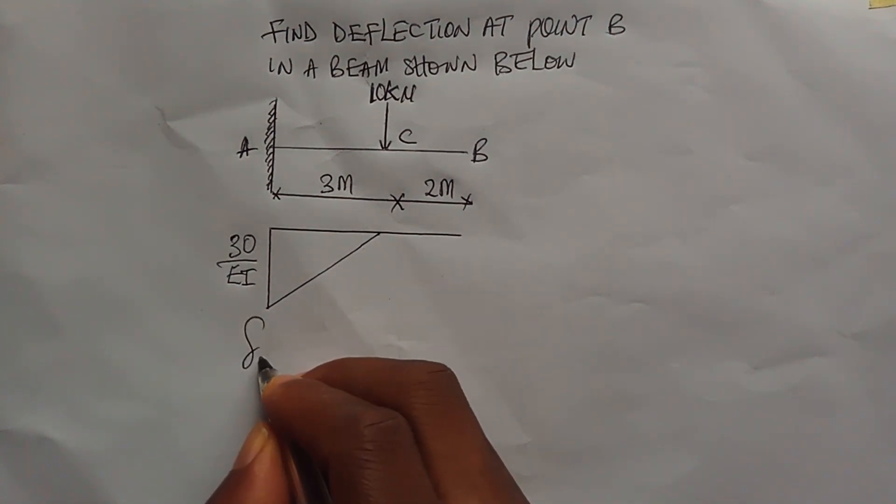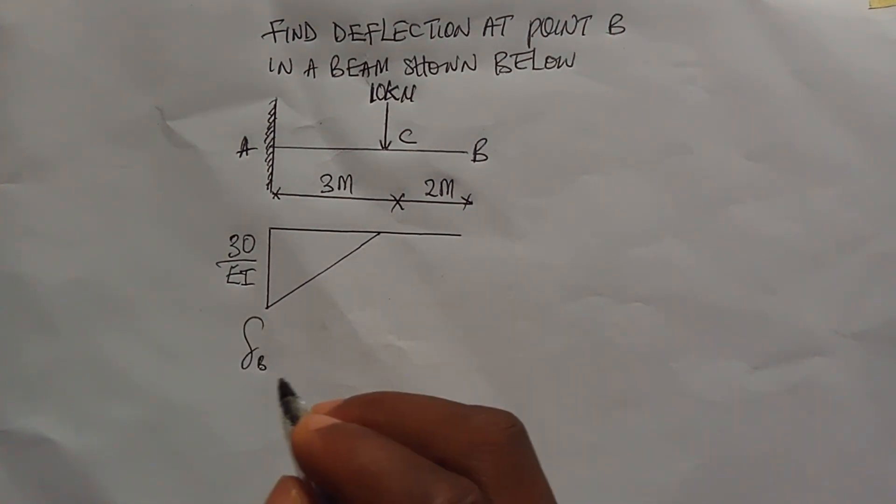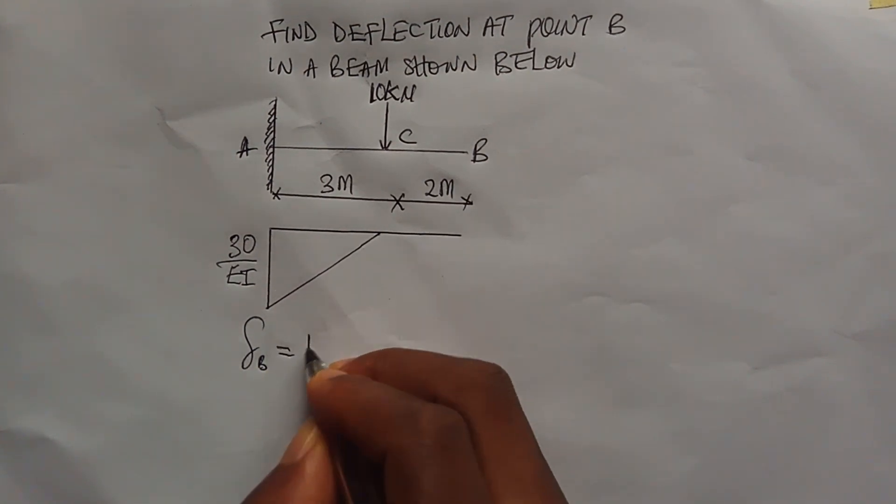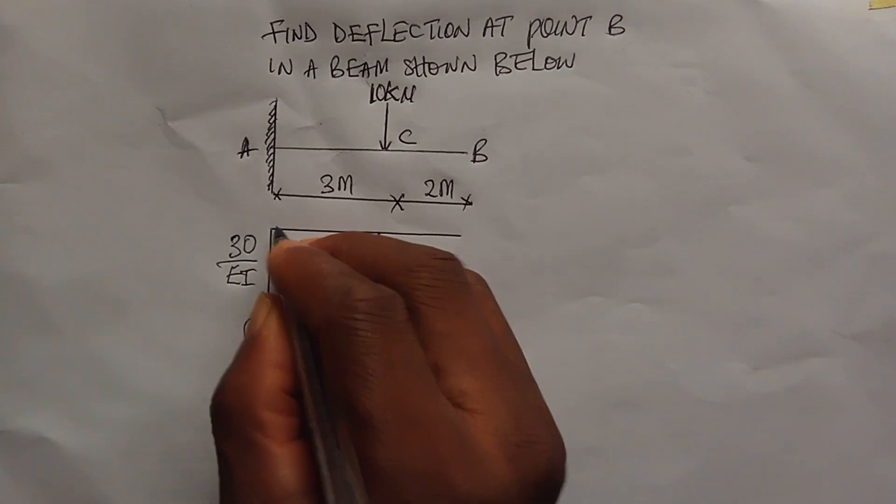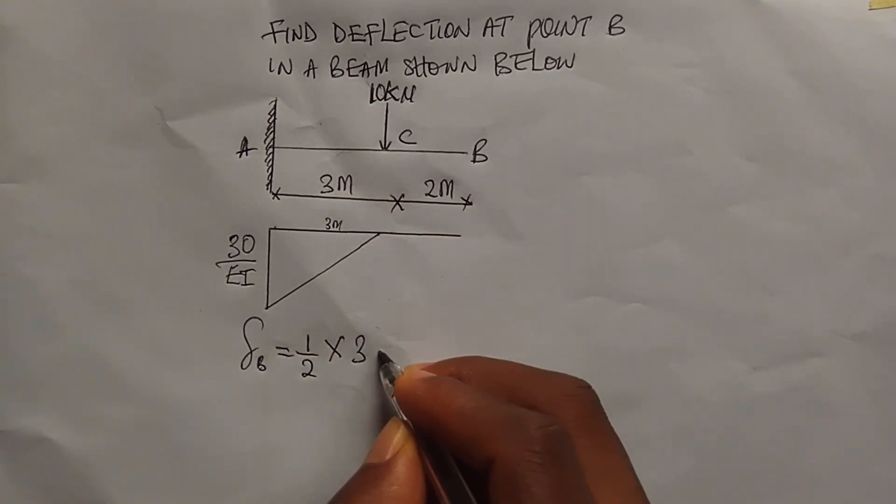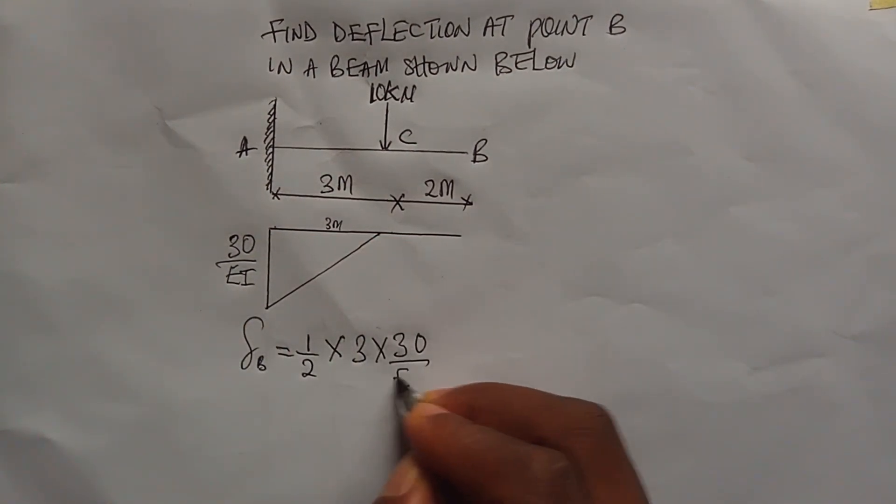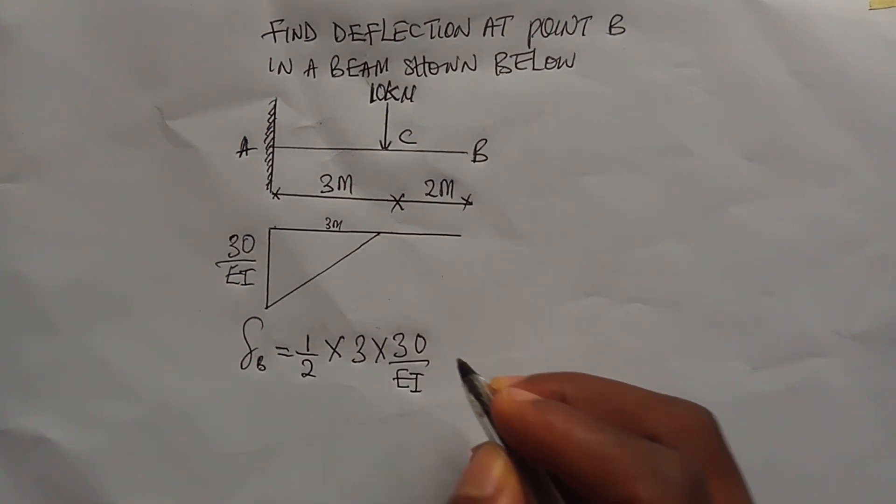You know that this is a triangle and the area of a triangle is half base times height. So the base is 3 because from here to here is 3m, and the height is 30 all over EI. Then multiply by the centroid.